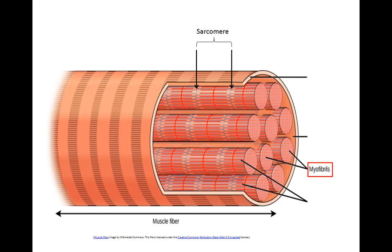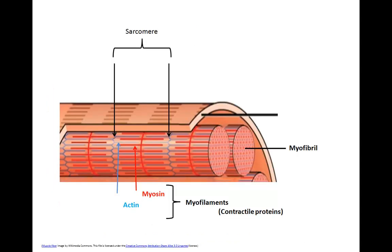Let's take a look at this diagram of a muscle fiber. The muscle fiber is actually made up of tiny bundles of myofibrils. The myofibrils are made up of bundles of myofilaments. The myofilaments, which are the contractile proteins of the muscle, are actin and myosin. The actin and myosin myofilaments are arranged in repeating units along the length of the myofibril. These repeating units form sarcomeres, the contractile unit of the muscle.